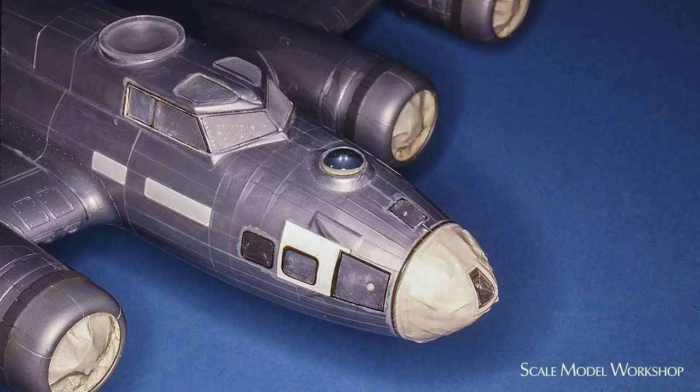The nose of this 1/48th scale B-17 brings together a number of techniques. All the windscreen panels have been replaced with acrylic that I milled to a thin cross-section and then cut to maximum size. All the other windows were replaced with oversized acrylic to hide the joint. An acrylic plug is used to keep dust out of the interior.